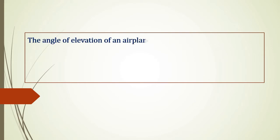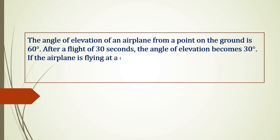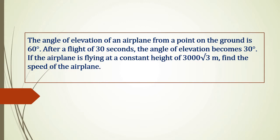Trigonometry. The angle of elevation of an airplane from a point on the ground is 60 degrees. After a flight of 30 seconds, the angle of elevation becomes 30 degrees. If the airplane is flying at a constant height of 3000 root 3 meters, find the speed of the plane.